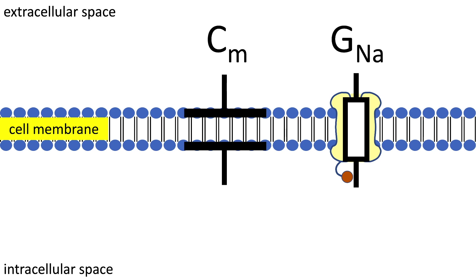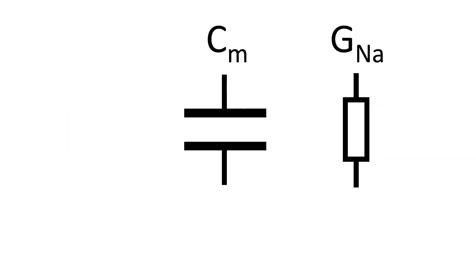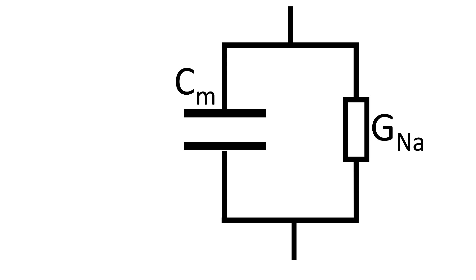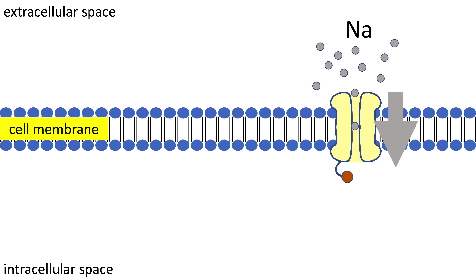Now with this we have a simple model representing the cell membrane and a single channel. Looking back at the current flow, we see that the sodium flows due to the high concentration in the extracellular and the low concentration in the intracellular space.